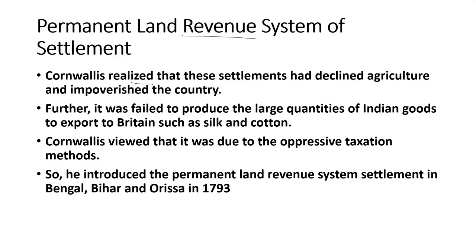But these two settlements ended in failure. Both were oppressive, and they required raw materials for the British from Bengal — that is, silk and cotton. So, Lord Cornwallis abolished this annual settlement introduced by Warren Hastings in Bengal, and introduced the Permanent Land Revenue System of Settlement in 1793 in Bengal, Bihar and Orissa.